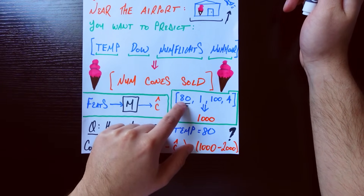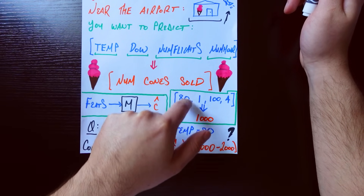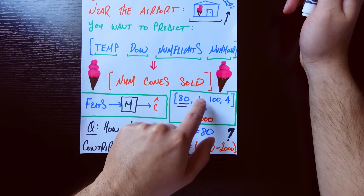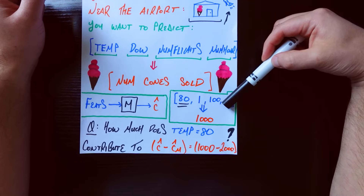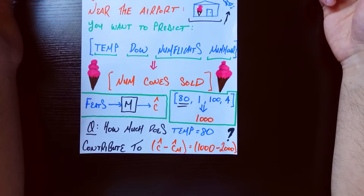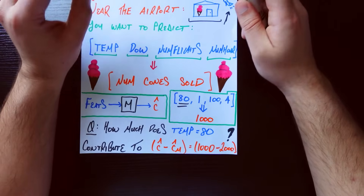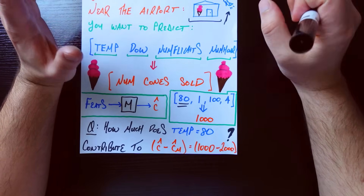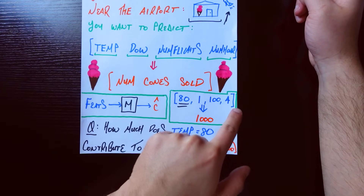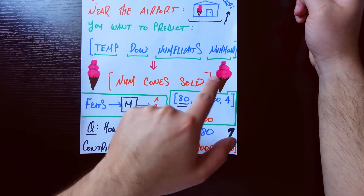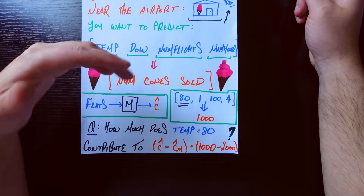Putting in some real numbers we'll work with in this video: let's say the temperature is 80 degrees Fahrenheit, it's a Tuesday, there are 100 flights coming in today, and your shop is open for four hours. Your model predicts that 1,000 cones will get sold today. The question that Shapley values answers — and one we very much care about — is how much does each of these features contribute to the difference between this prediction and the average prediction.